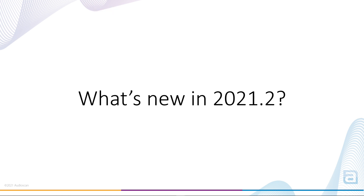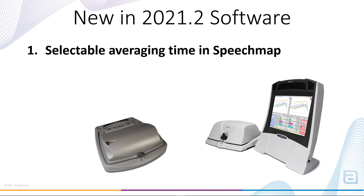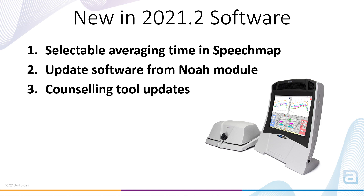What's new in 2021.2? Selectable averaging time in SpeechMap, equipment software updating through NOAA, and, for the Verifit 2 only, some updates to the SpeechMap counseling tool.